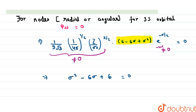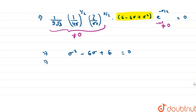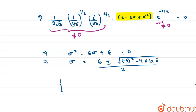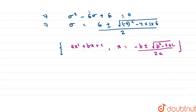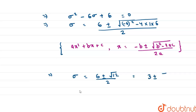This is a quadratic equation. The roots are given by the quadratic formula: for ax² + bx + c = 0, x equals minus b plus or minus root of b² minus 4ac, all divided by 2a. On simplifying, we get sigma equals 6 plus or minus root 12, divided by 2, which equals 3 plus or minus root 3.